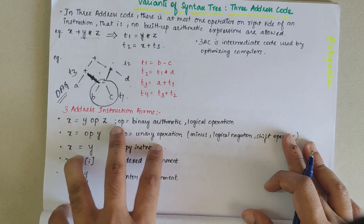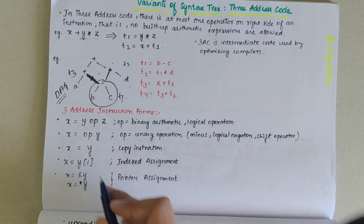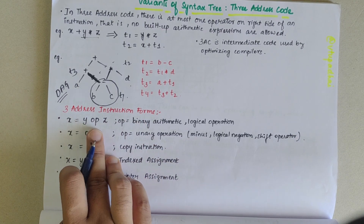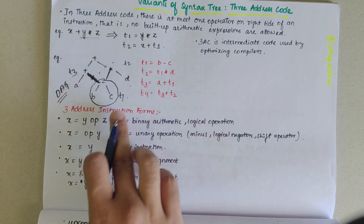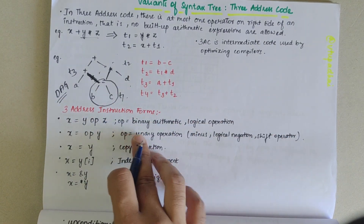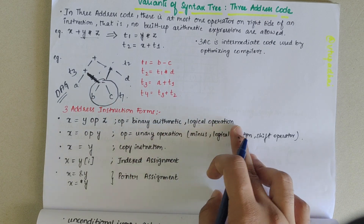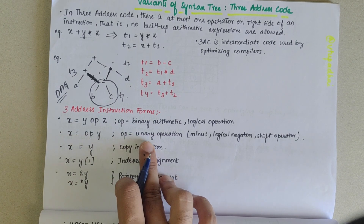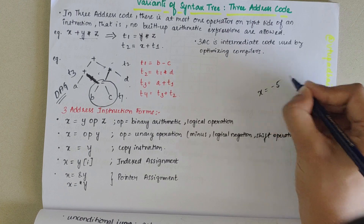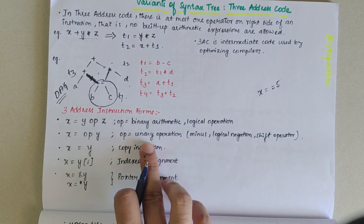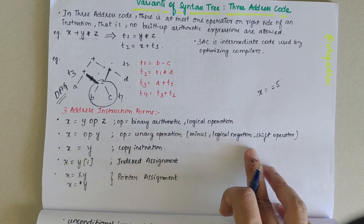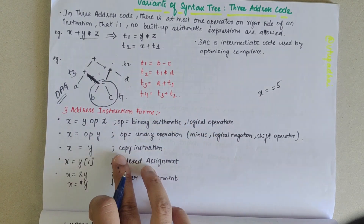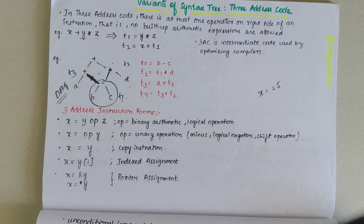The three address instruction could be of many forms. It is usually of the form x equals y operation z, where y and z are variables and the operation is a binary arithmetic or logical operation. It could also be x equals operation y, where the operation is a unary operation — for example, x equals minus five, where minus is the unary operation. It could also be logical negation or a shift operation. If x equals y, that means the values are being copied — that is the copy instruction.